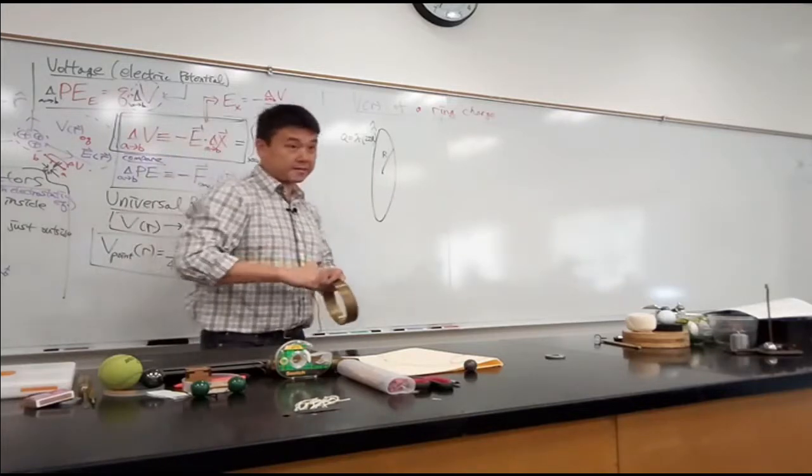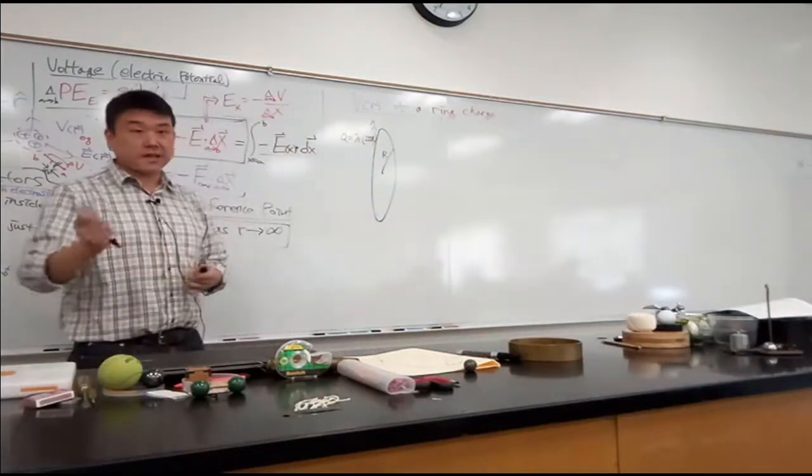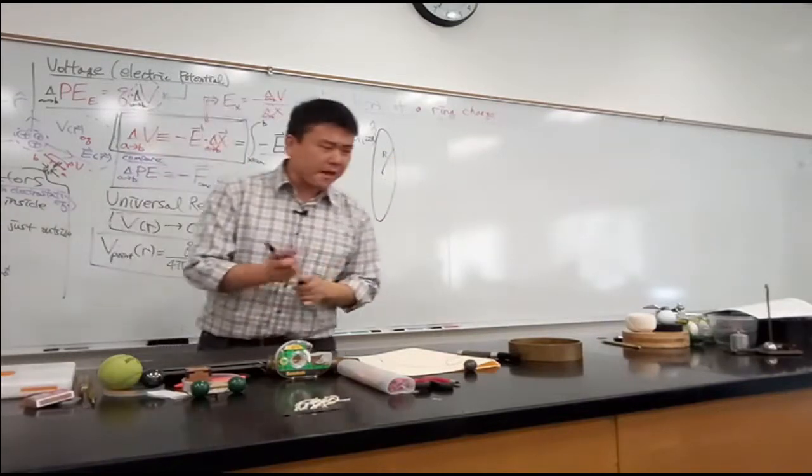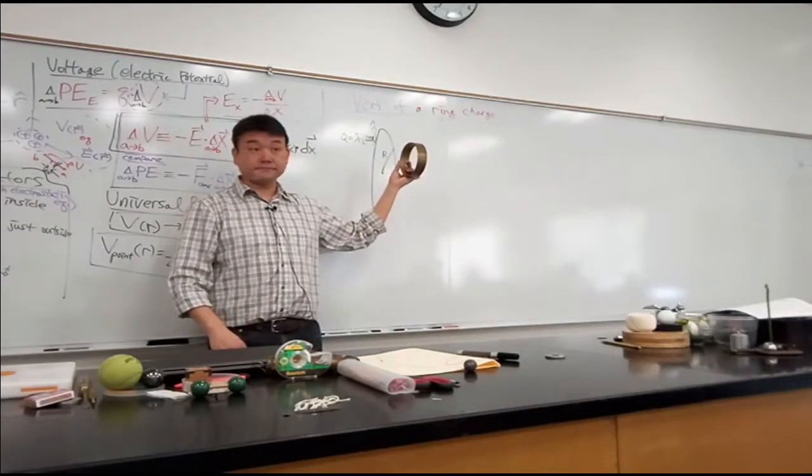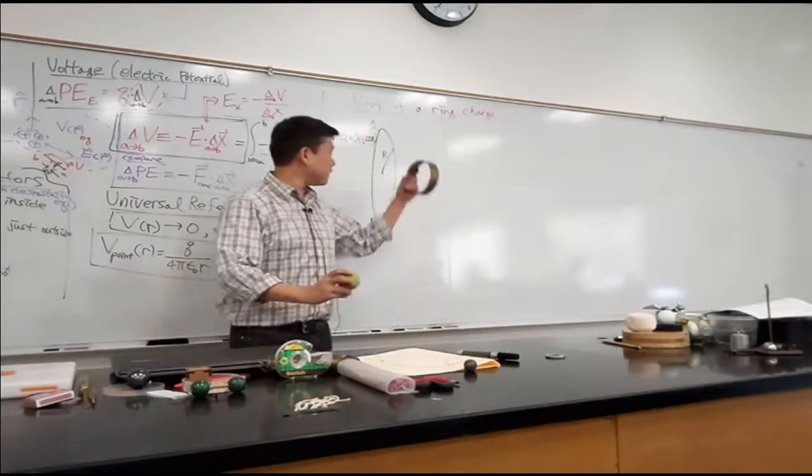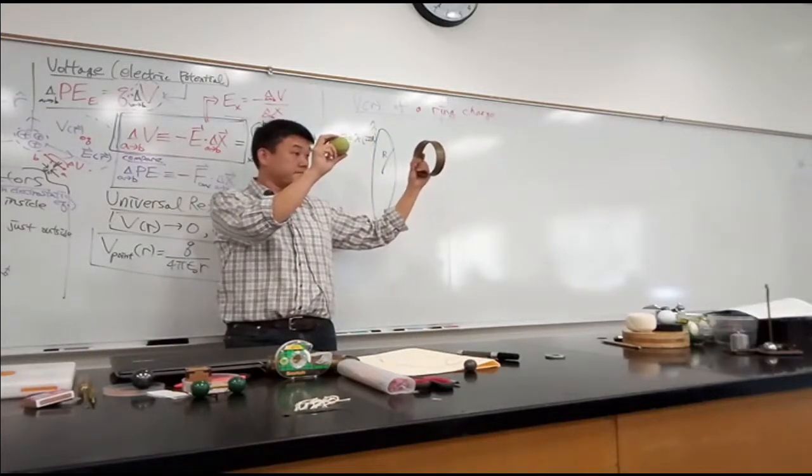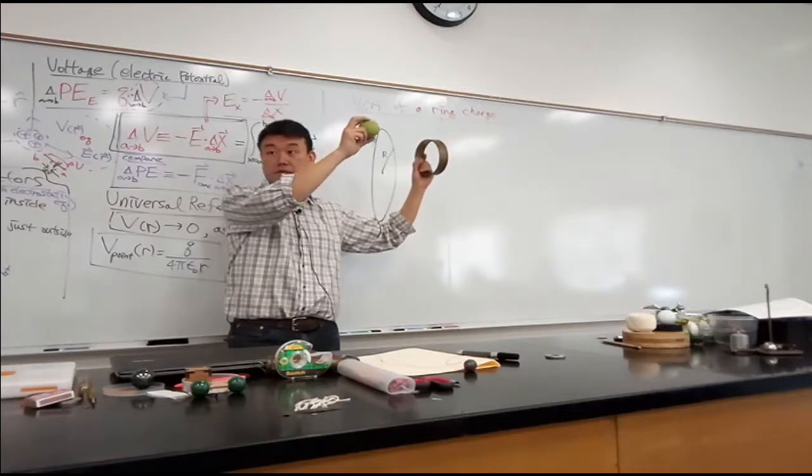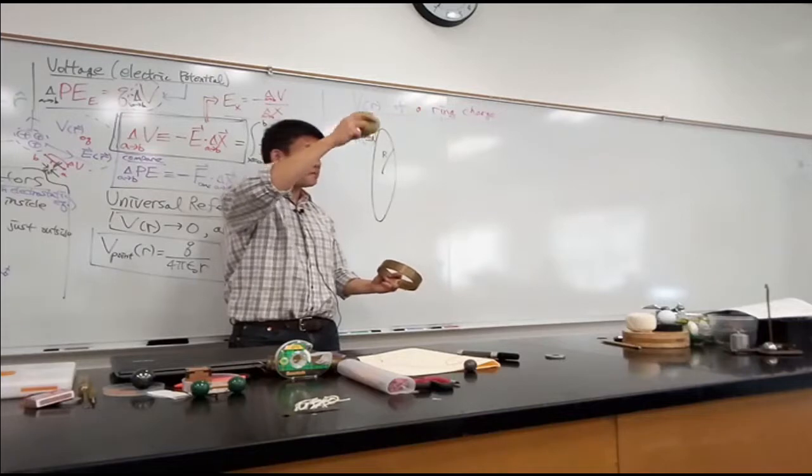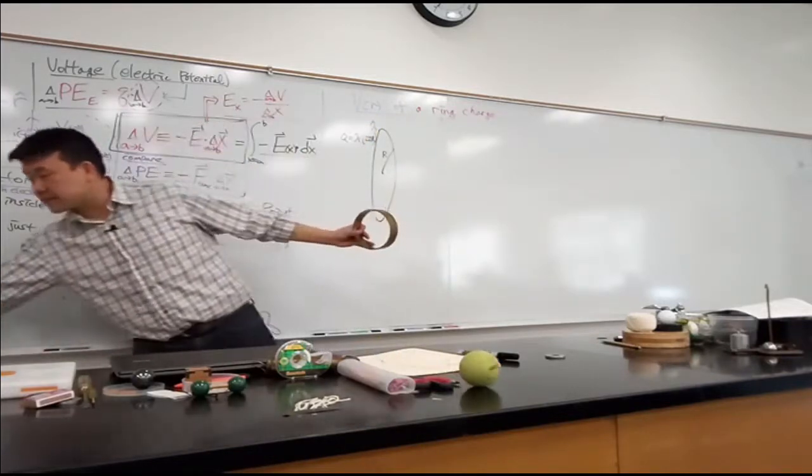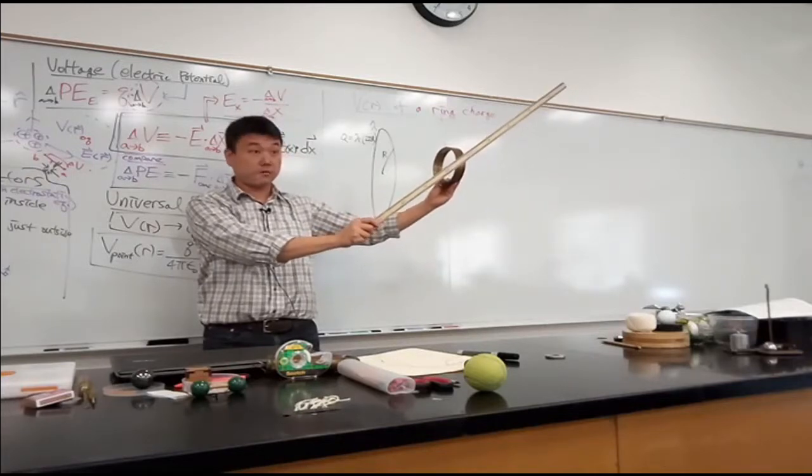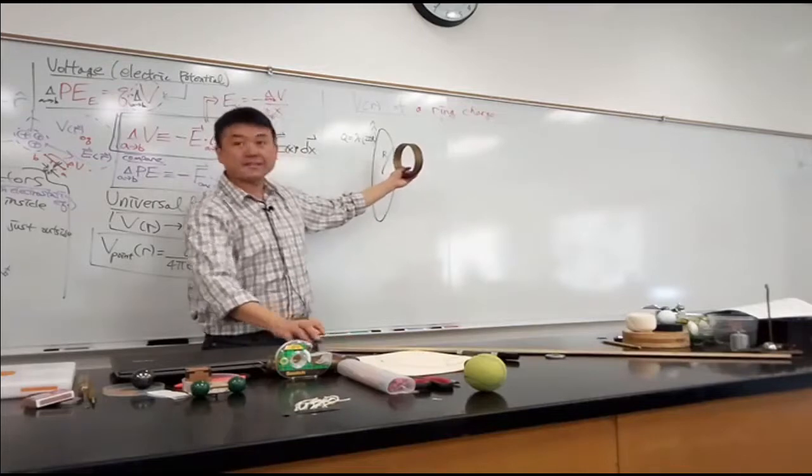And this is the question that someone could ask, and actually at the level of this class, you could answer. It takes some work, but you could answer. So let me ask you this question: does this situation look highly symmetric? It is somewhat symmetric. Compare this ring case with the spherical case. Is this ring case as symmetric as the one with the sphere? No, right? There aren't as many symmetry operations you can apply here. With a ring, there's really only one axis where you can rotate it around and it will be symmetric. So with this ring charge, it's not highly symmetric. It has some symmetry.